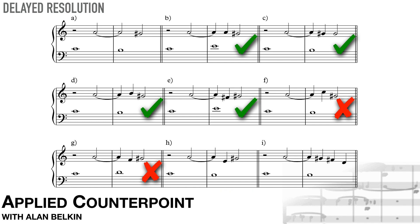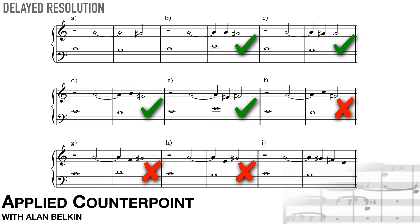H might seem okay at first, but careful listening points out a problem. The E creates a fourth with the cantus, which really needs to resolve to D, rather than the G-sharp which we need to complete the suspension. Finally, I demonstrates a different kind of problem. Here the dissonance resolves to G-sharp as expected, but on the second beat while the third beat moves on to another note. The problem here is rhythmic. Normal species counterpoint is in 2-2 time, which means that the second quarter note is an offbeat. If we really feel the beat in 2, the resolution arrives between beats, creating a sort of mild syncopation.